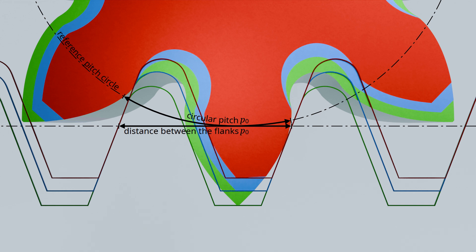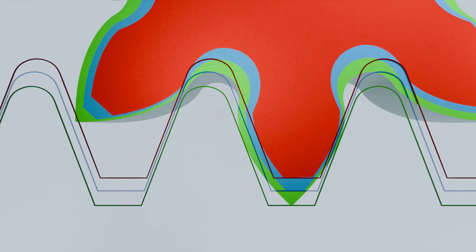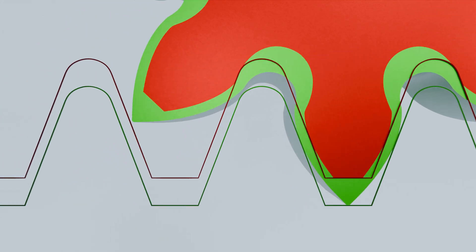This means that the manufacturing pitch circle ultimately corresponds to the standard reference pitch circle. Since a profile shift has no effect on the manufacturing pitch circle and thus on the resulting reference pitch circle and the associated circular pitch, profile shifted gears can easily mesh with non-profile shifted gears. Let's take a closer look at the effects of the profile shift on the geometry of the gear.